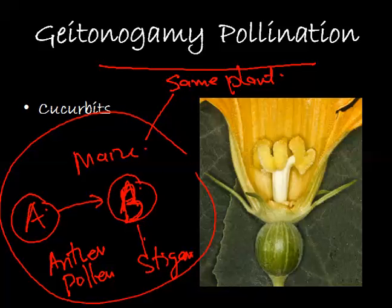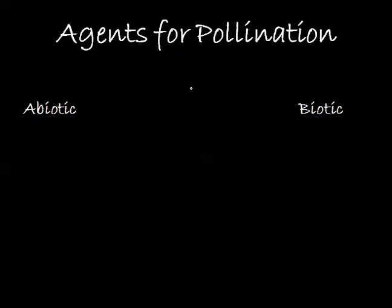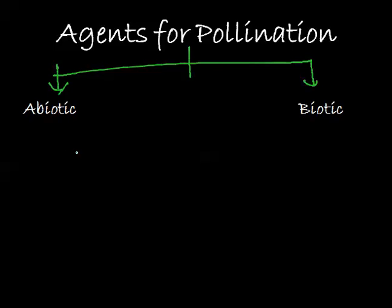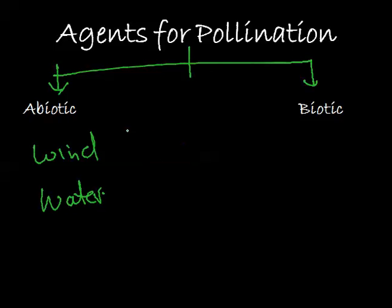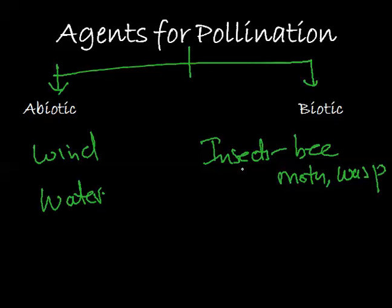Now we can discuss different agents responsible for pollination. We can divide them into two categories: abiotic agents and biotic agents. Abiotic agents consist of wind and water — these are the means by which pollen is transferred from one plant to another or within the same flower. In the biotic category, we have insects like honey bees, moths, and wasps, which help in transferring pollen from one flower to another.